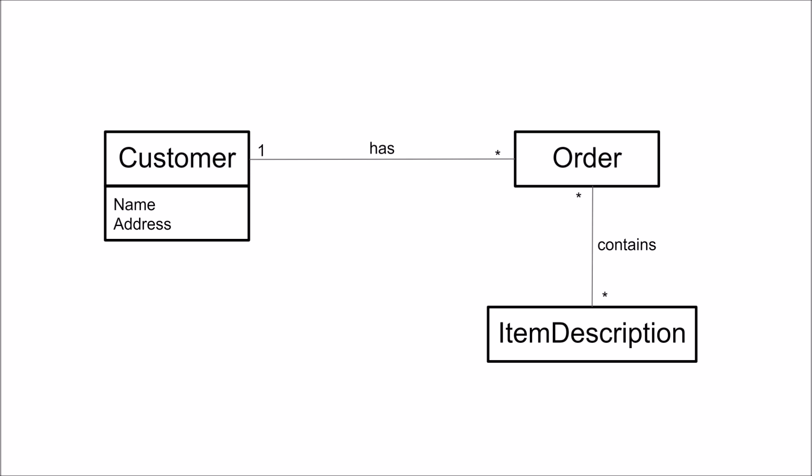We have some attributes that are important for customers, such as name and address. And we have the relationships — in this case, associations between the different classes.